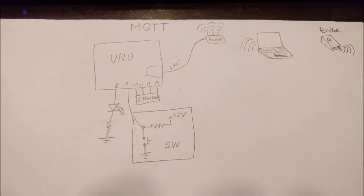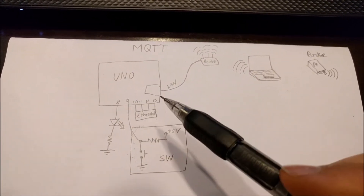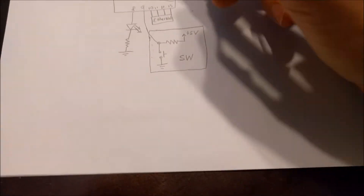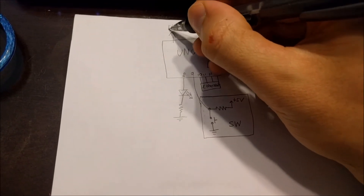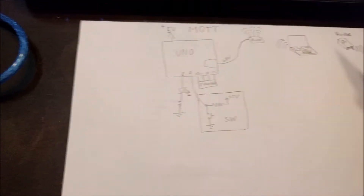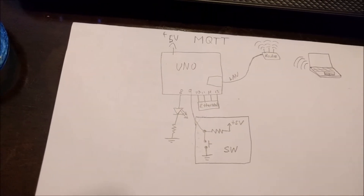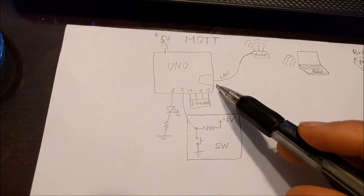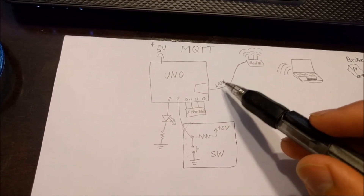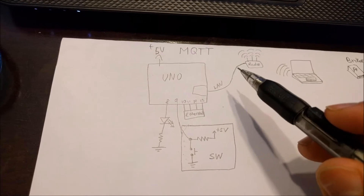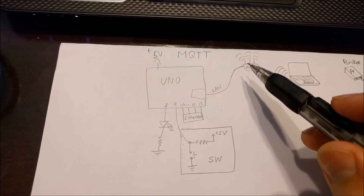A lot of people ask me for a schematic, so I drew this really fast one. We have Arduino Uno here connected to 5 volts, and then the Ethernet cable is connected straight to my router. Don't make the mistake of connecting the Ethernet cable to the laptop or the computer. This goes to a router or an Ethernet switch — it does not connect to your computer.